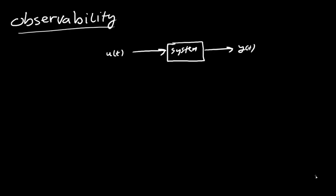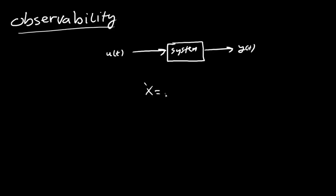In this video we talk about observability in modern control systems. If we have a system with some input and output, and we describe the system using state-space form — X-dot equal to AX plus BU, and Y equal to CX — we say that this system is completely observable if some conditions are satisfied.